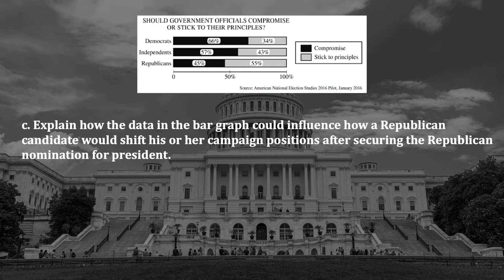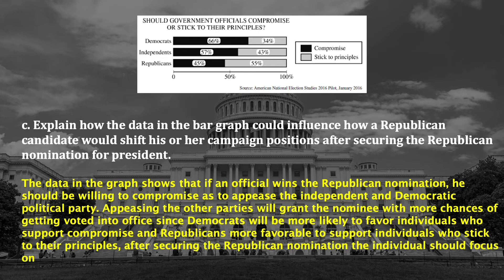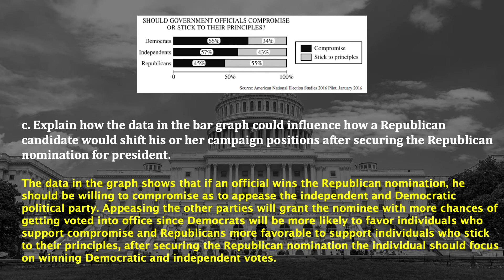Let's take a look at Part C: Explain how the data in the bar graph could influence how a Republican candidate would shift his or her campaign positions after securing the Republican nomination for president. Remember, when explaining, you need to elaborate and provide evidence — use the word 'because' to make relationships clear. Looking at a response that earned this point, the student elaborated well. In the first sentence, she gives her basic answer that after winning the nomination, the Republican candidate should be willing to compromise. She then continues and elaborates, explaining that they could appeal to Democrats and independents who prefer compromise, and this might help them win the election.